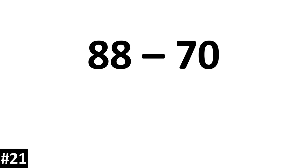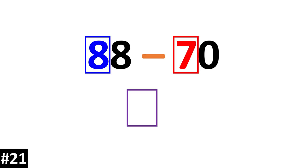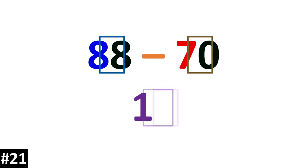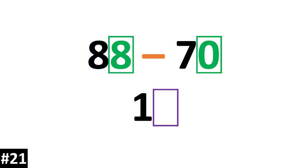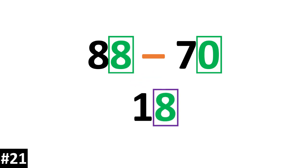88 minus 70. 8 10s minus 7 10s is 1 10. We look to the ones: 8 minus 0 is 8. So our answer is 18.